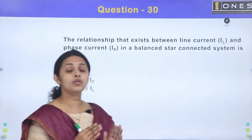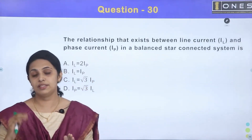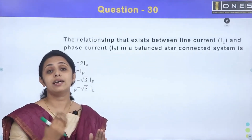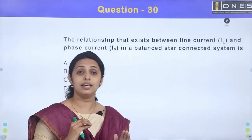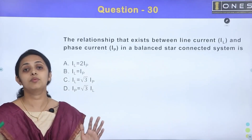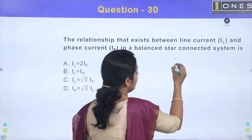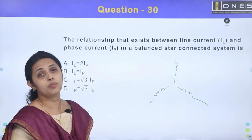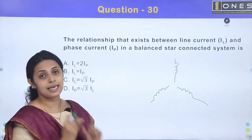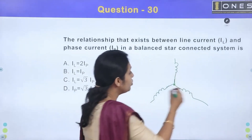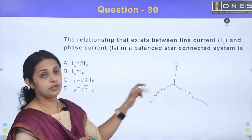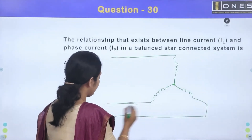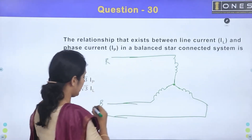In a three-phase system, we have three coils connected together. In star connection, the coils correspond to phases R, Y, B. We connect similar endpoints together to form the star (neutral) point, and the other terminals form the three line connections. The current flowing through the line conductor is the line current; the current through each coil is the phase current.